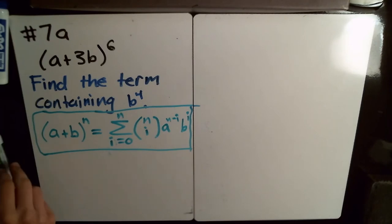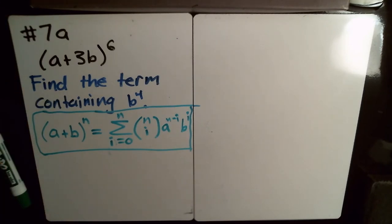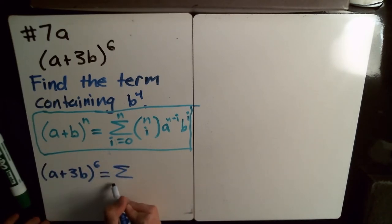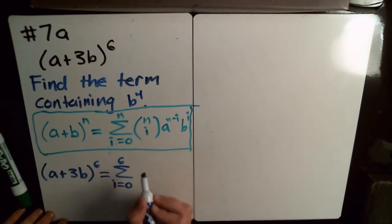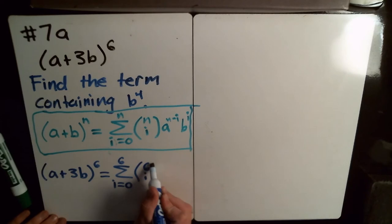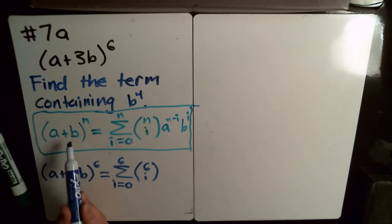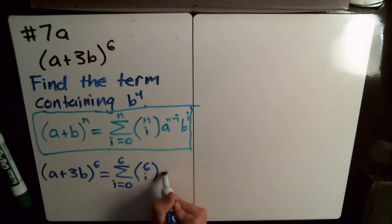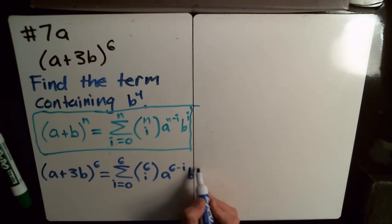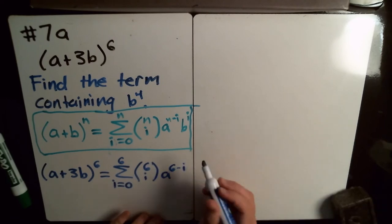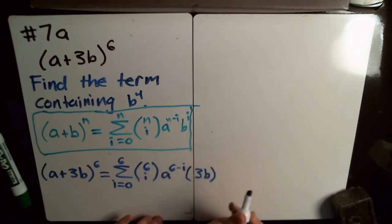So in our case, what we're dealing with here is a plus 3b to the 6th power is equal to the sum from i equals 0 to 6 of 6 choose i. Everywhere there's an n, I'm putting in a 6. As well, I don't just have a and b in here. I have a and 3b, so the a stays the same. We're going to have 6 minus i, but b is going to switch, and we're going to be doing powers on 3b.